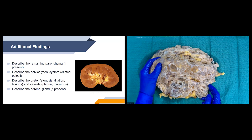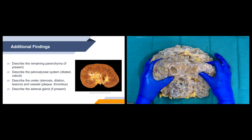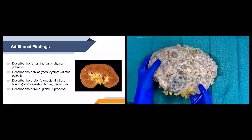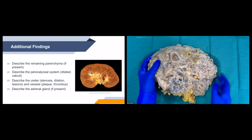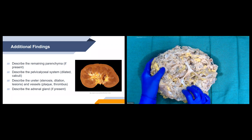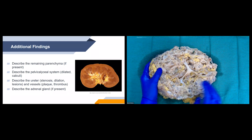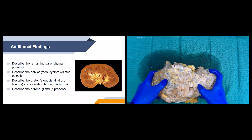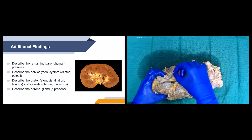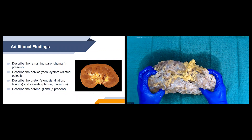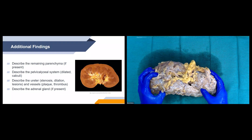For additional findings, we describe any remaining parenchyma if present — here's what normal kidney parenchyma looks like, and our specimen doesn't show anything resembling normal parenchyma. We also describe the pelvic calyceal system for dilation or calculi, the ureter for stenosis, dilation, or lesions, the vessels for plaques or thrombus, and the adrenal gland if present.